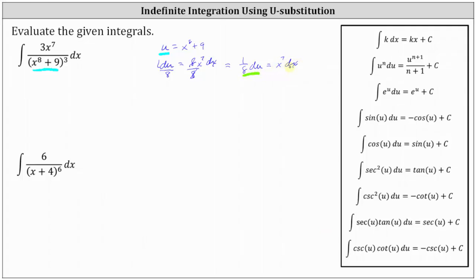If one eighth du is equal to x to the seventh dx, we can replace x to the seventh dx with one eighth du, and the entire integral will be in terms of u. Notice we still have this three, which we can factor out. We have three times the integral, and x to the seventh dx is equal to one eighth du. Let's factor out the one eighth, giving us three eighths times the integral of one divided by u to the third, which we'll write as u to the power of negative three du.